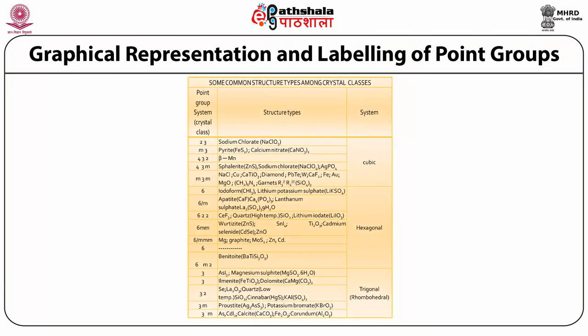Similarly, in Table 4.3 one can see crystal classes under the cubic system, hexagonal system, trigonal or rhombohedral system. The crystal classes are shown in the respective columns and corresponding common crystal structures among these crystal classes are given.